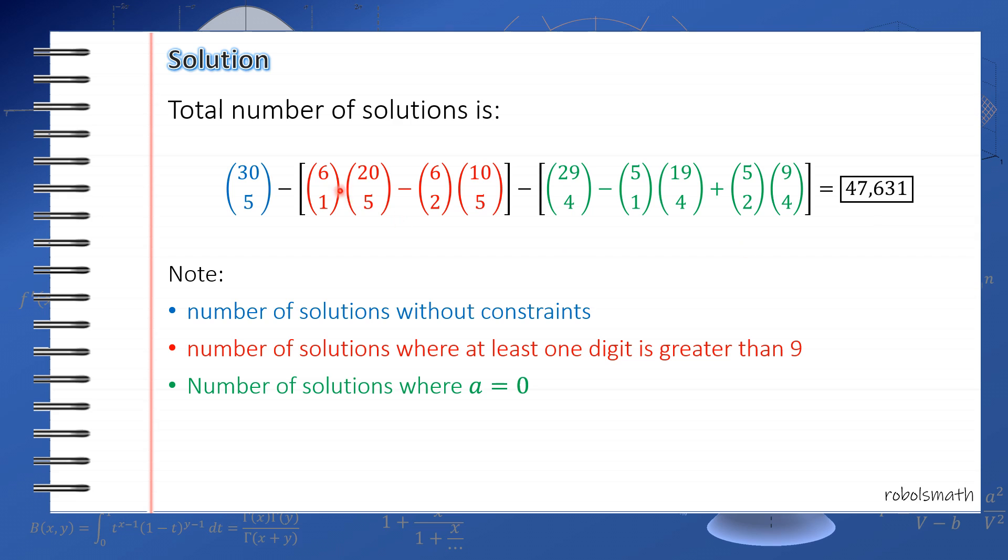So first, you start with the general case. So if your total is 25, that's 25 plus 6 minus 1 taken 6 minus 1. So that's the general case. Then, from that total, you minus 10 to the upper variable. That's 20 taken 5. And then you multiply by 6 taken 1, 6 being the number of variables. And then, from 20, you subtract 10 again to get 10 taken 5. Then 6 taken 2. Then next, you can't subtract 10 anymore, because if you do that, you'll get 0. And 0 taken 5 is just 0. So you do that subtraction by 10 as long as the number of this variable here is greater than this variable here.